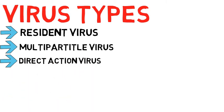Type 3: Direct action virus. Direct action viruses attack certain types of files, typically .exe and .com files. The main purpose of this virus is to replicate and infect files in folders. On the lighter note, they do not typically delete files or affect PC performance and speed, and can be easily removed by antivirus programs.